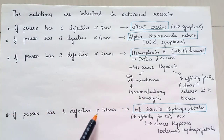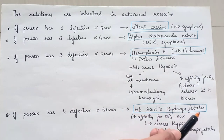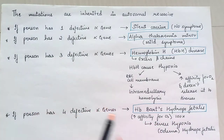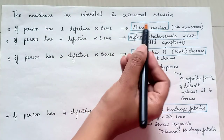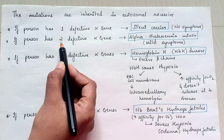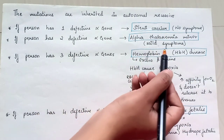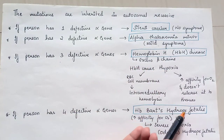If a person has 4 defective alpha genes, hemoglobin Bart's hydrops fetalis can be seen. Here there is increased affinity of oxygen that is more than 100 times, so we can see severe hypoxia and edema. In summary: 1 defective alpha gene — silent carrier; 2 defective alpha genes — alpha thalassemia minor; 3 defective alpha genes — hemoglobin H disease; 4 defective alpha genes — hemoglobin Bart's hydrops fetalis.